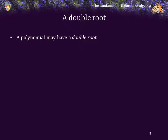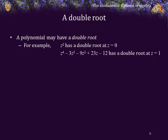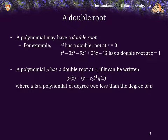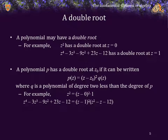You know from secondary school that a polynomial may have a double root. z squared has a double root at z equals 0. This quartic polynomial has a double root at z equals 1. A polynomial P has a double root at z0 if it can be written in the form z minus z0 all squared times q of z, where q is a polynomial of degree 2 less than the degree of P. For example, z squared can be written as z minus 0 all squared times 1, where 1 is the constant polynomial. Here is a quartic polynomial, and it has a double root at z equals 1, so it can be written as z minus 1 all squared times the quadratic z squared minus z minus 12.